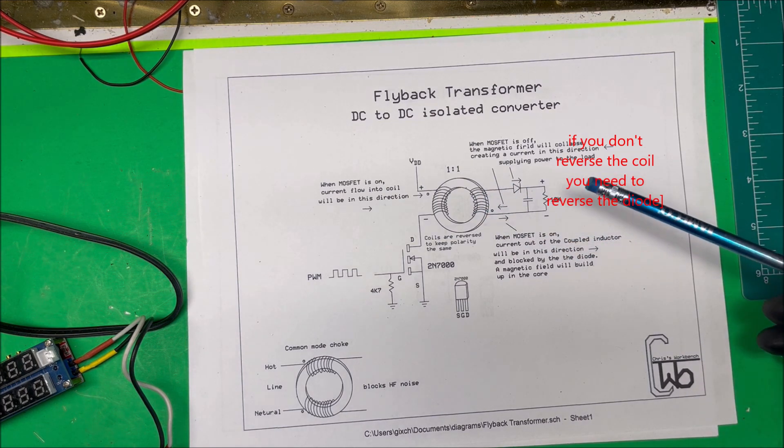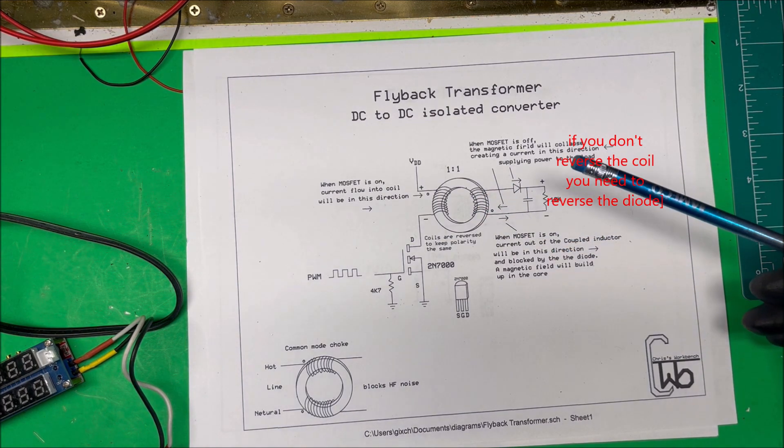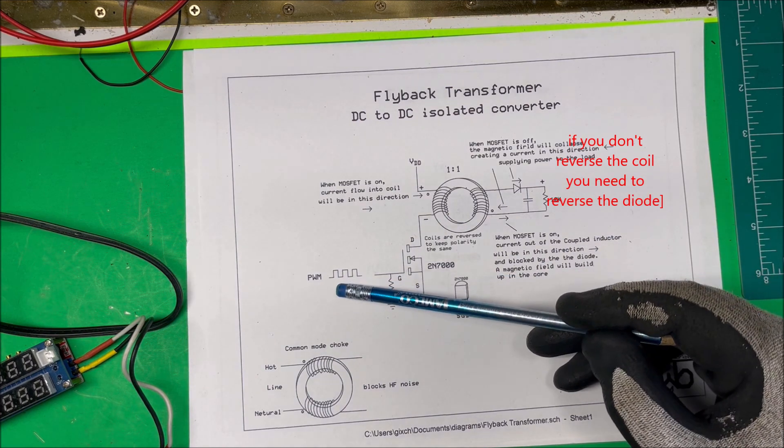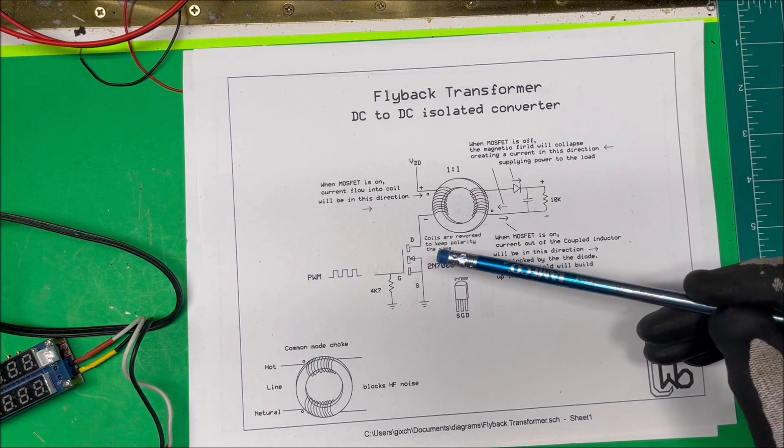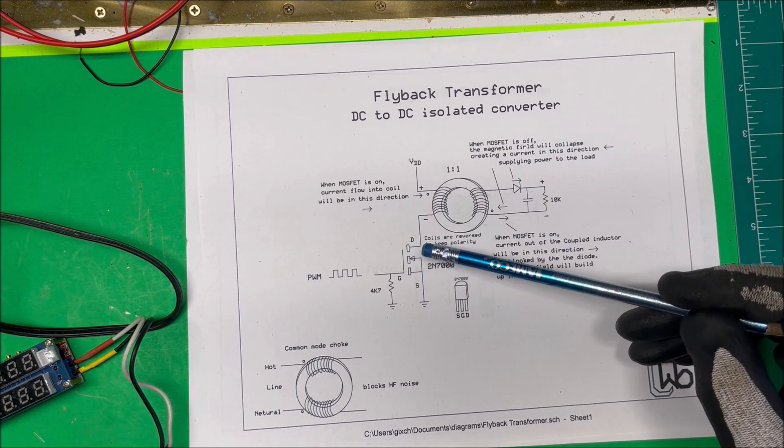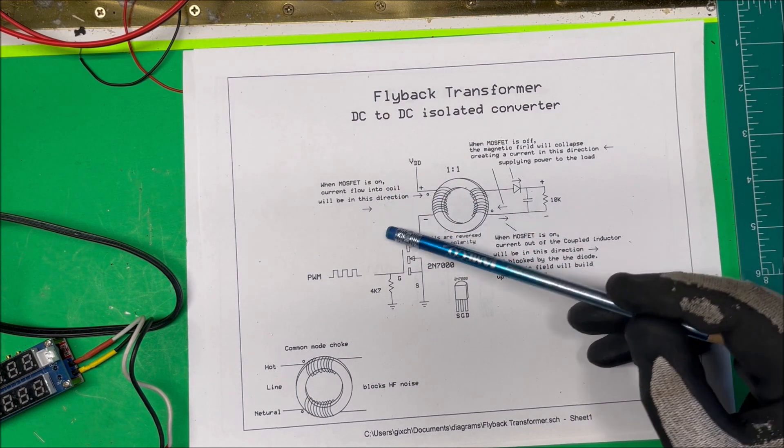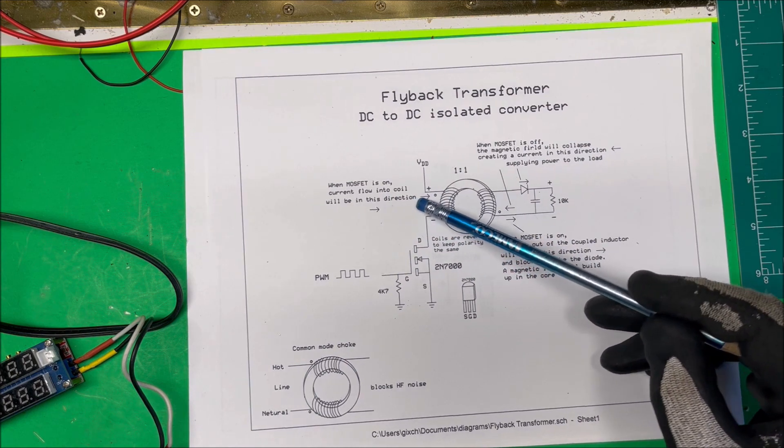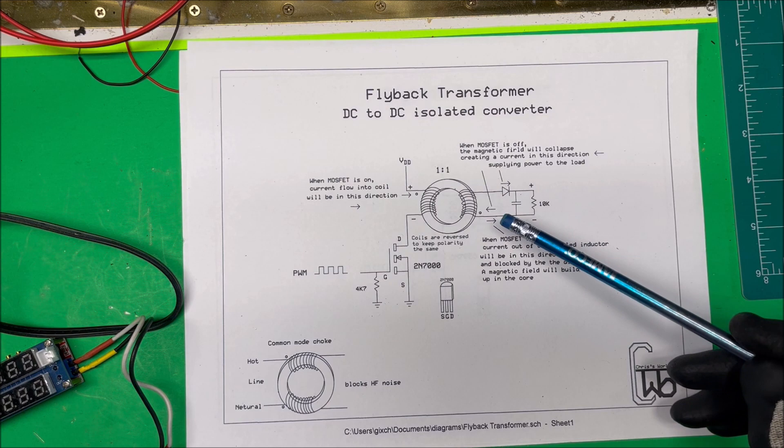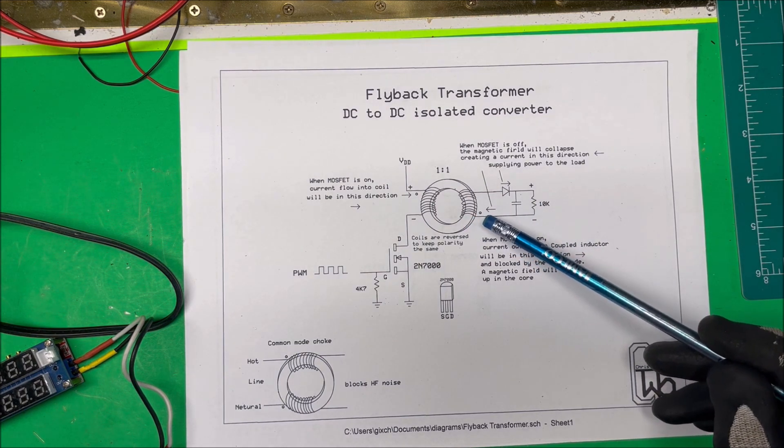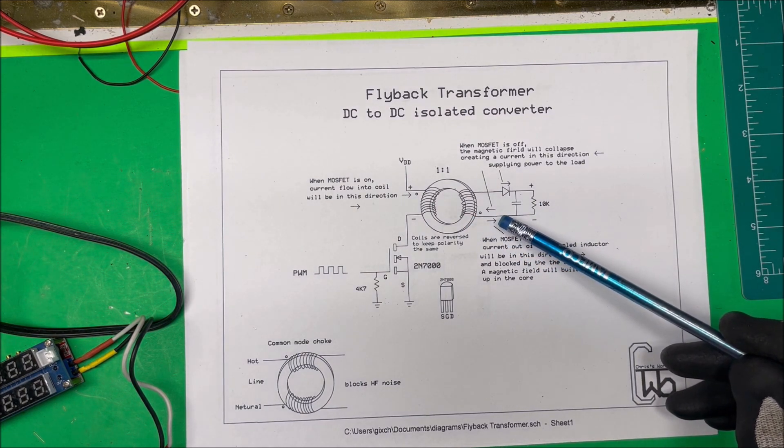What happens here is we have a pulse coming in from our PWM, and it's turning on and off this MOSFET here. When the MOSFET is on, current flows into the coil in this direction, into the dot here. When the MOSFET's on, current flows out of the coupled inductor.